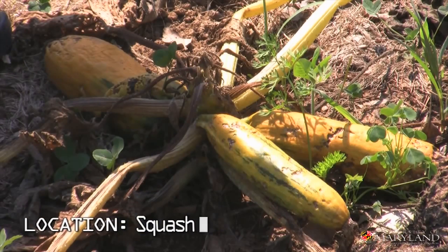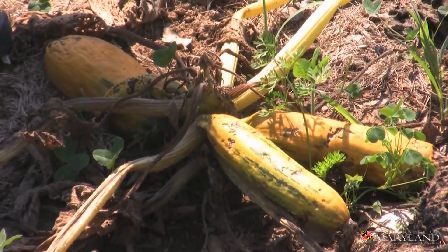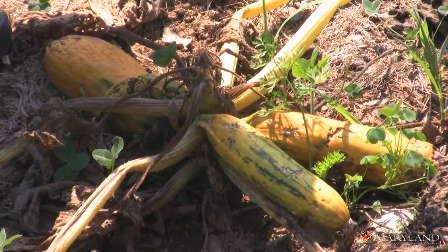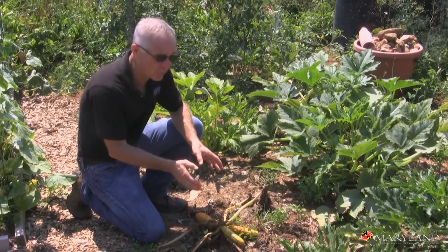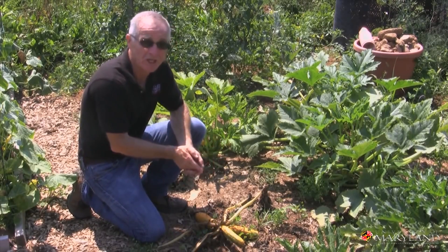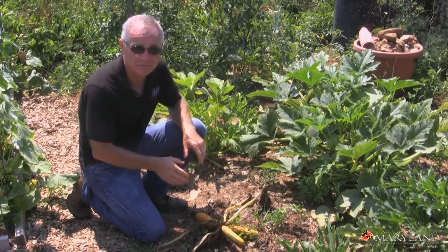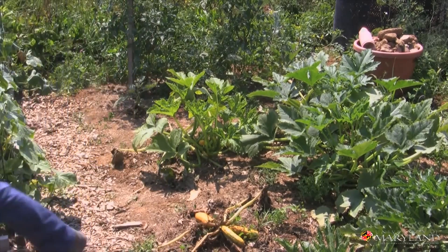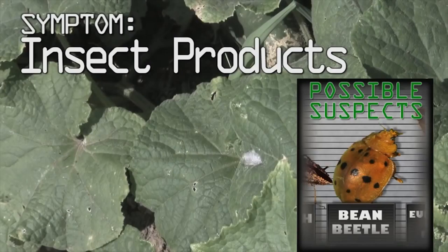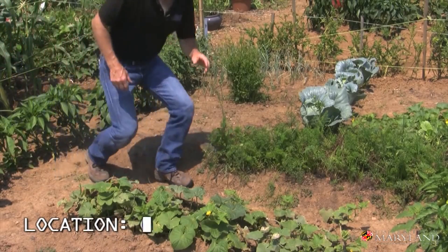Sometimes we find a victim that's been dead a while. This little squash plant died from a bacterial wilt disease that was carried by a cucumber beetle earlier in the season. Whenever we see dieback, we know the vascular system has been damaged, and usually damage to the vascular system can be lethal.